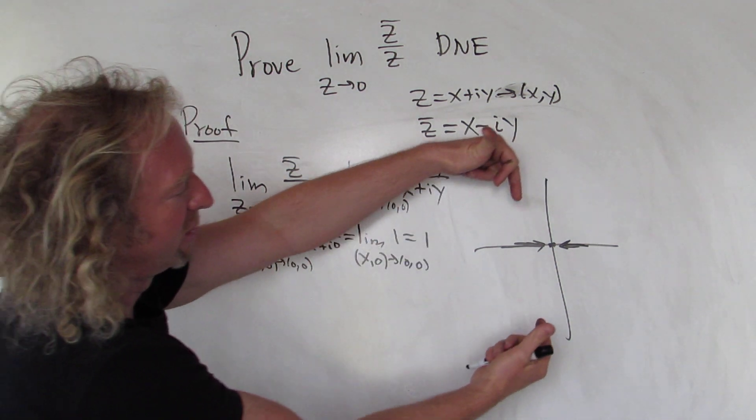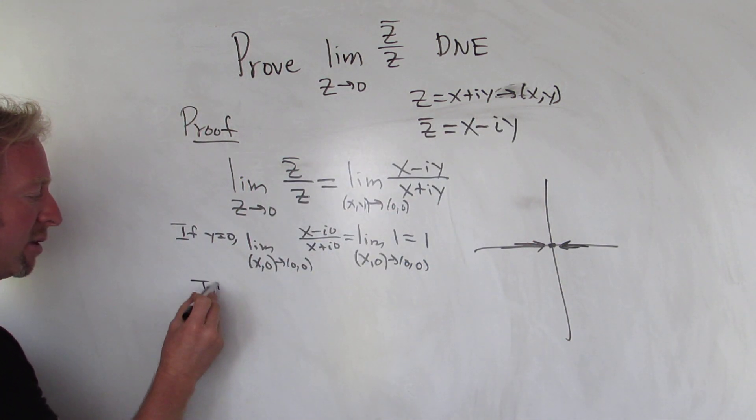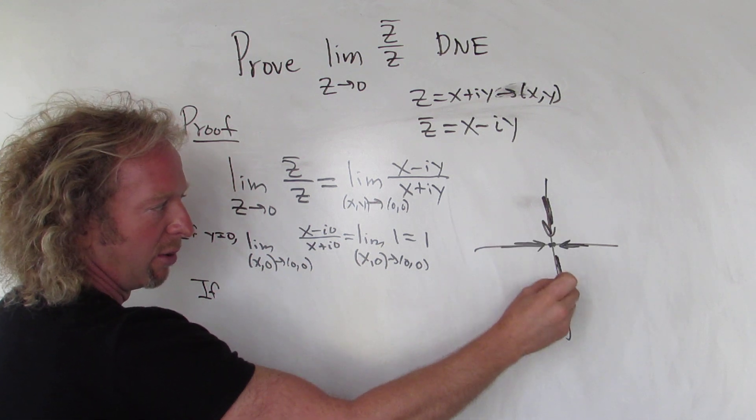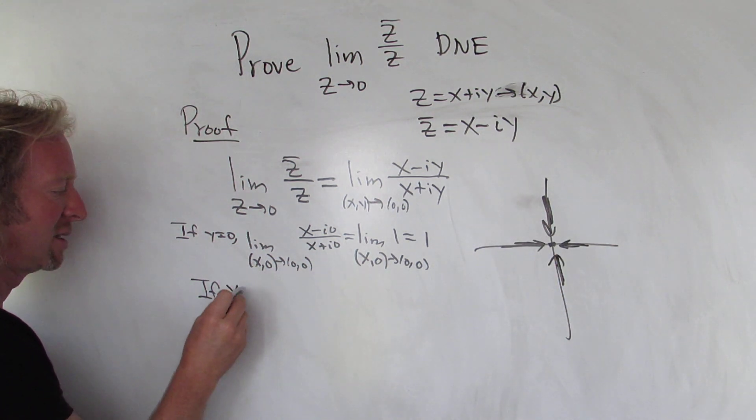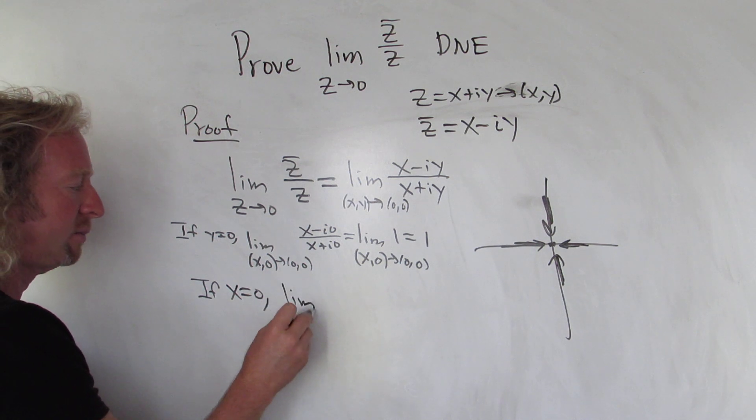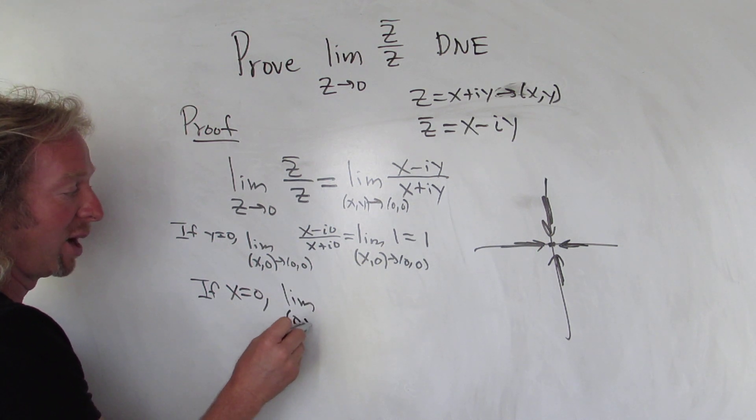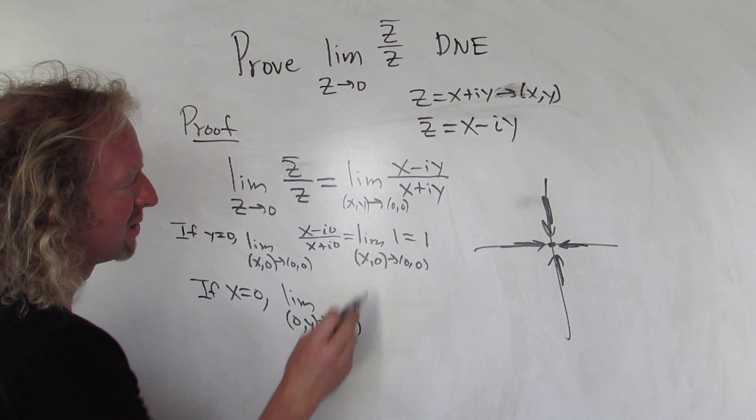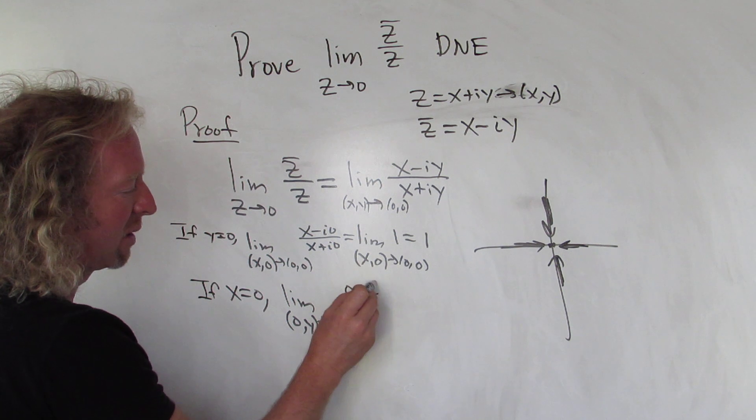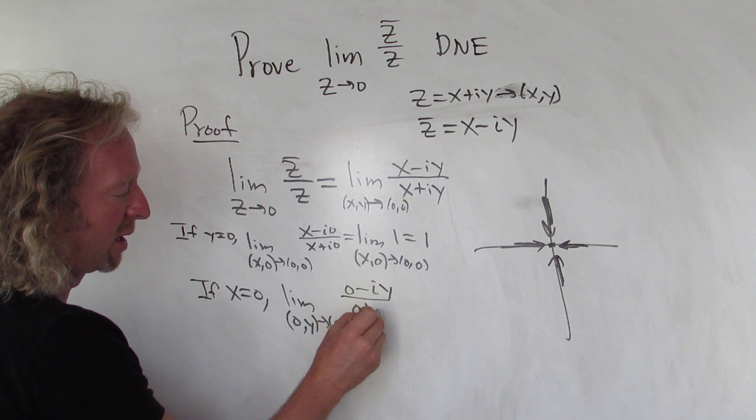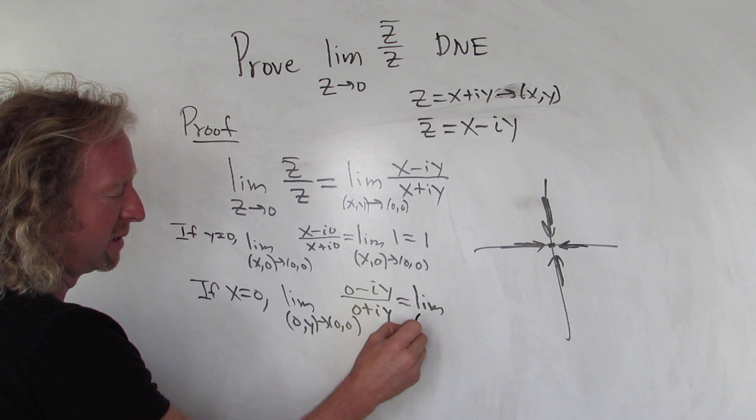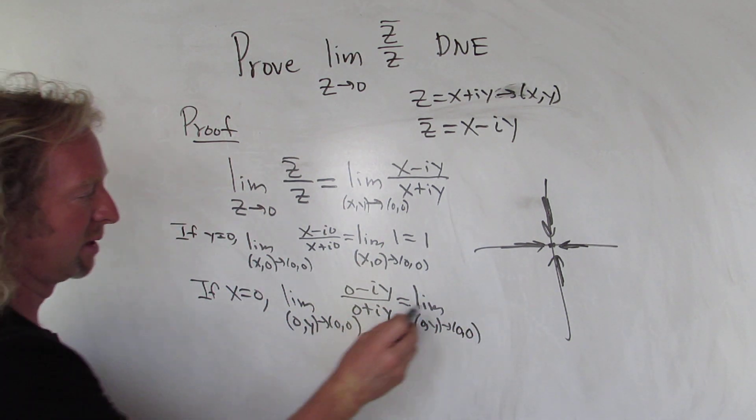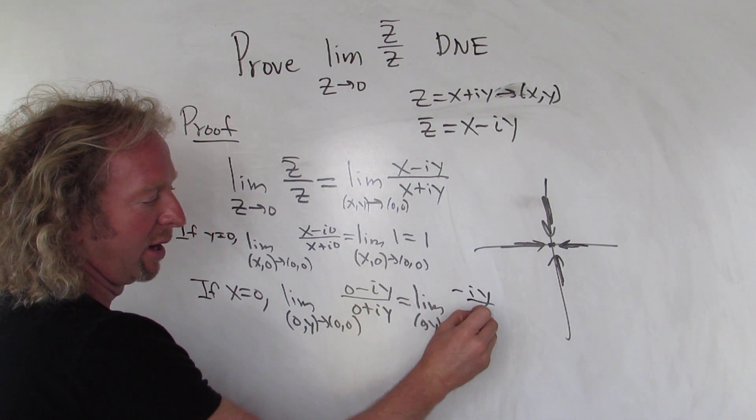The natural thing to do now is try to approach zero along the imaginary axis. If we're on the imaginary axis and approaching zero, that means x equals zero. So if x equals zero, this would be (0,y) approaching (0,0). Now all the x's are zero, so it'd be (0 minus iy) over (0 plus iy). This is negative iy over iy, and these cancel.